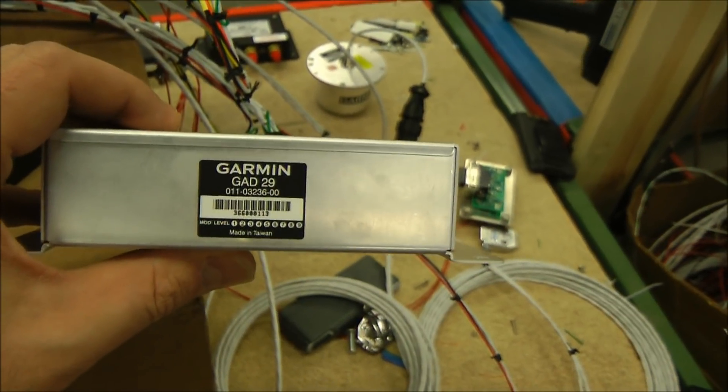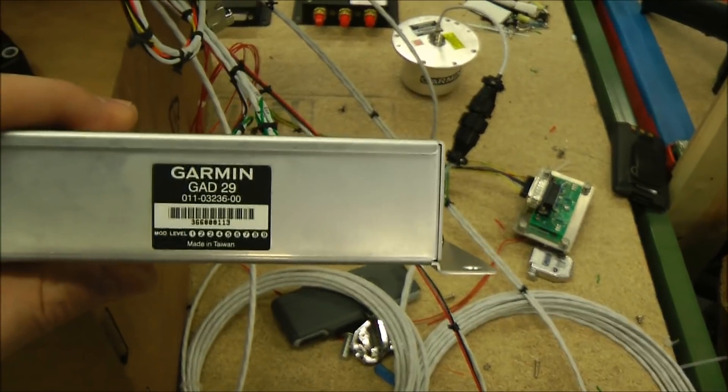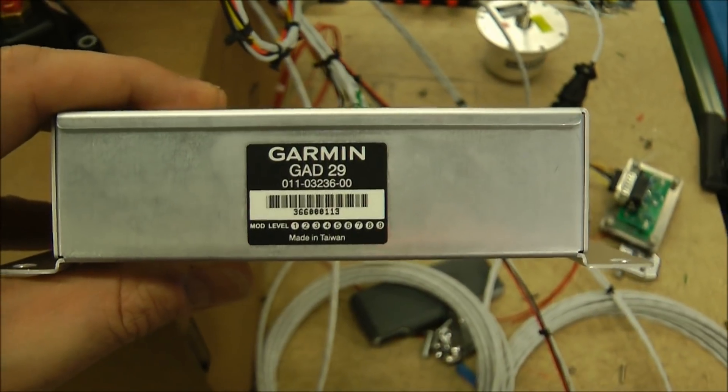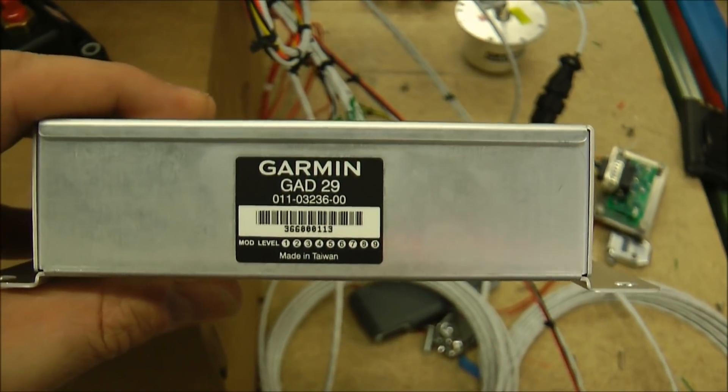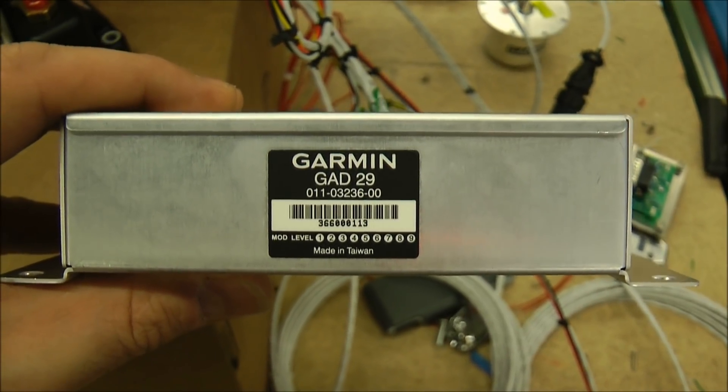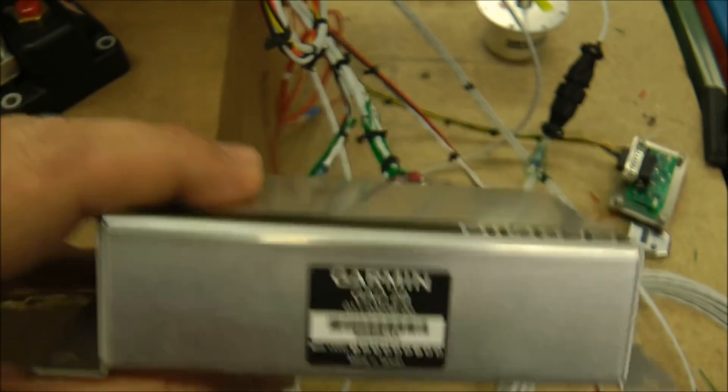Here's the Garmin Air Inc module. This is the converter that converts signals from the radio to the EFIS for like GPS steering commands and approaches and things like that. All of them have them. Dynon, Garmin, Advanced Flight. Everybody has an Air Inc module.